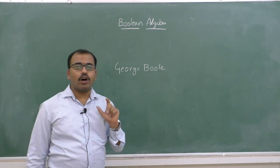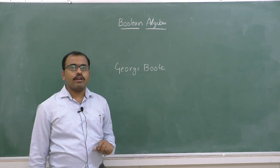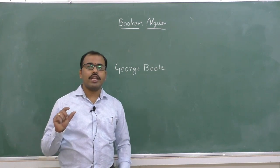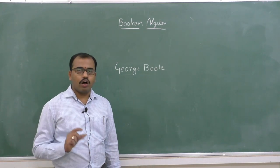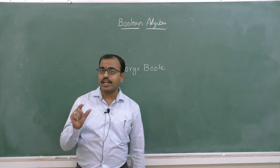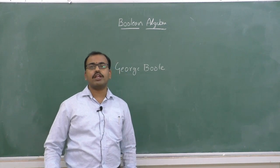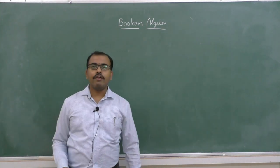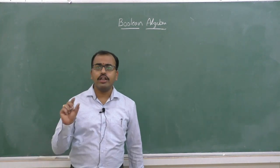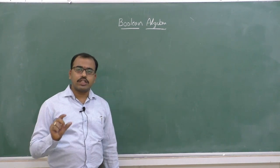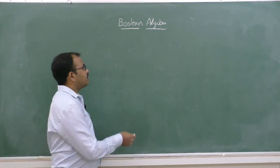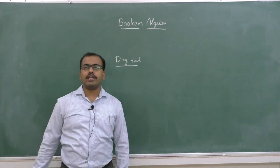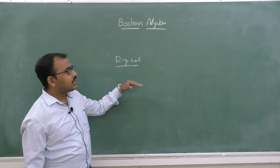Now let us recall some basic concepts of computer science. What do you mean by computer? Computer is an electronic machine, or also we can call it as a digital system. A digital system is one which operates on 0s and 1s. The system which operates on 0s and 1s is called as a digital system.